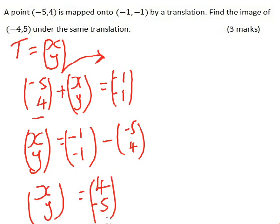So that is the translation vector. This means our point (-4, 5) will be translated like this. We have (-4, 5). We add the translation vector, which is (4, -5).